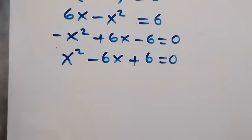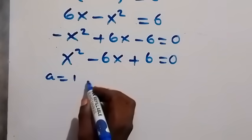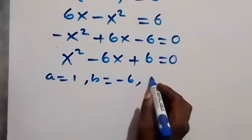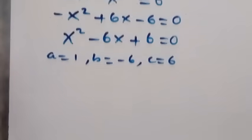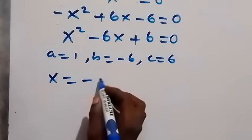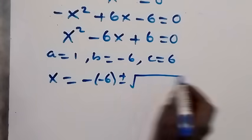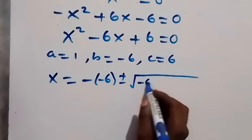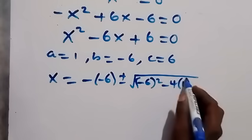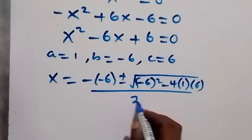We can solve for x using the quadratic formula. Here we have a equals one, b equals negative six, and c equals six. Using the quadratic formula, x equals negative b — that's minus negative six — plus or minus the square root of b squared, which is negative six squared, minus four times a times c, which is one times six, all over two times one.